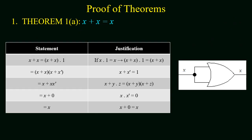The first theorem states that a Boolean variable x added with itself gives a value of x. In hardware realization, it is a two-input OR gate with both inputs common, so the output equals the input. Using Boolean postulates, we know x · 1 = x, so x + x multiplied by 1 also equals x + x. Replacing 1 with (x + x'), and applying distributive law gives x + x · x'. Since x · x' = 0, we get x + 0 = x, proving the theorem.